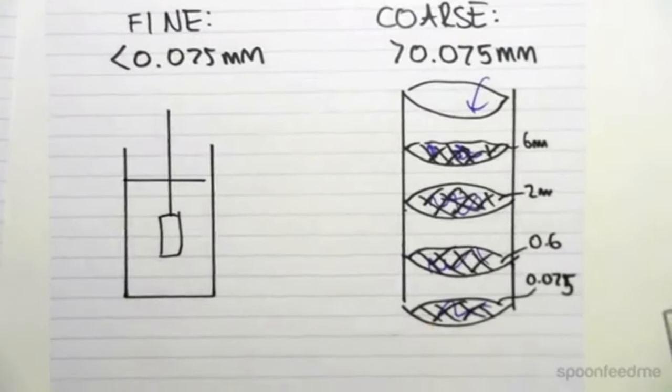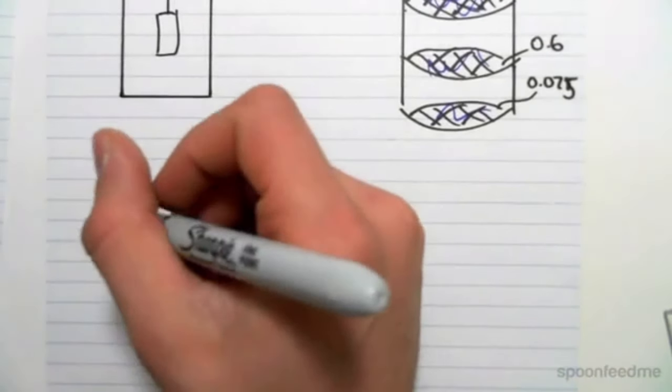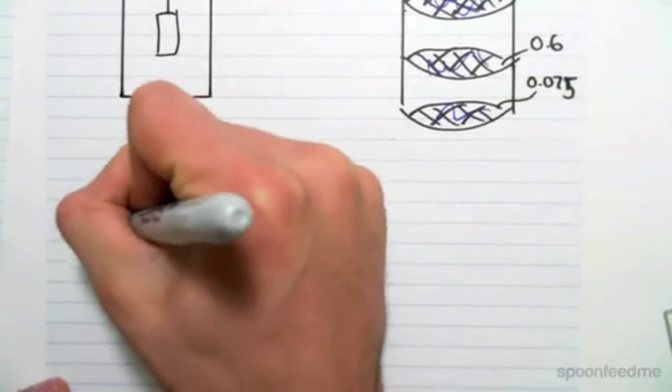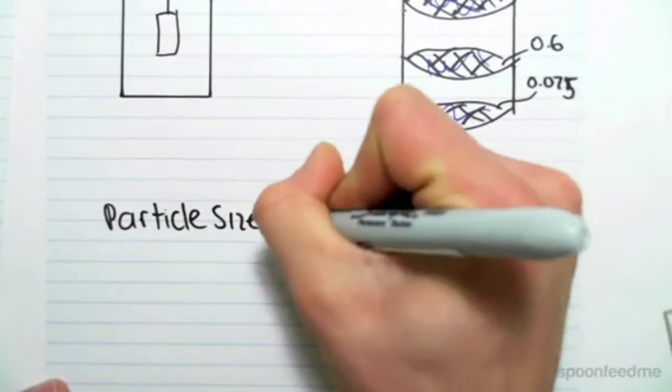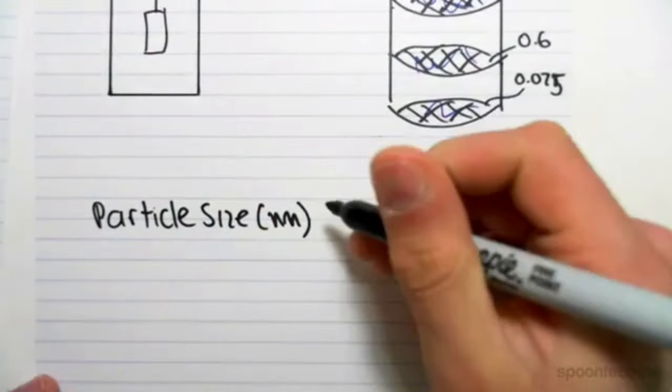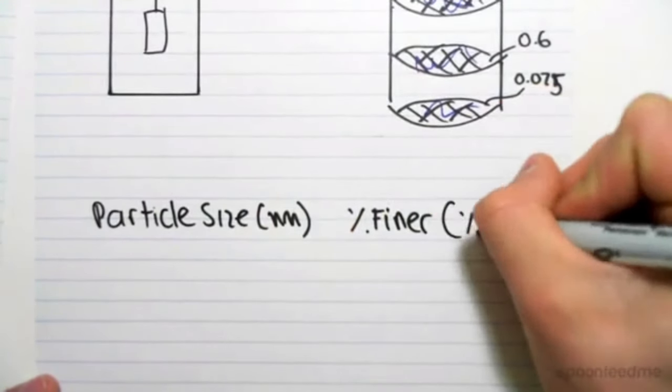Once we've done these two experiments in the lab, what we can do is we can draw a table which compares particle size, which will be in millimeters, against the percent finer. All this means, it's the same as the percent passing through here, so it's the same meaning, percent finer, percent passing through.